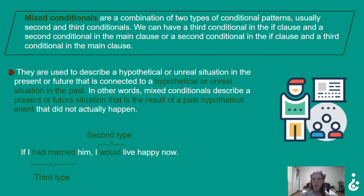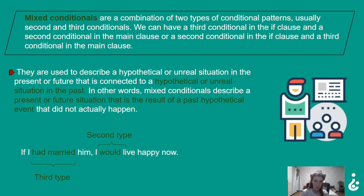Mixed conditionals are a combination of two types of conditional patterns, usually second and third conditionals. We can have a third conditional in the if clause and a second in the main clause, or a second conditional in the if clause and a third conditional in the main clause. They are used to describe a hypothetical or unreal situation in the present or future that is connected to a hypothetical or unreal situation in the past.